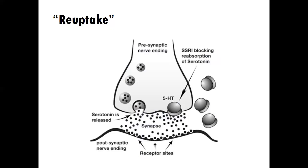So reuptake inhibitors block the reuptake. That leads to more serotonin being in the synapse, and therefore more likely to be eventually absorbed to the receptor site. In other words, what we're doing is increasing the amount of serotonin being transmitted from one neuron to another by basically blocking the reuptake of it — blocking the reabsorption of it into the cell that sent it in the first place.